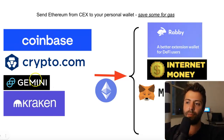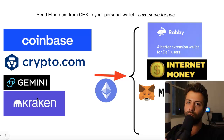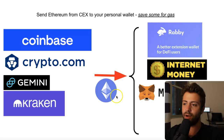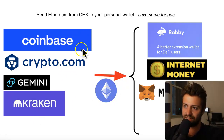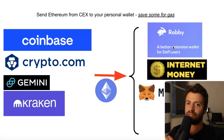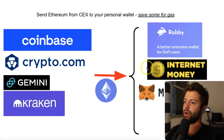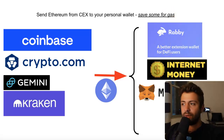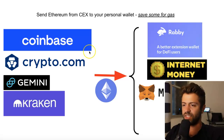Number one, you get a centralized exchange account — make multiple because what if one goes down? These let you buy crypto directly with your bank money. You link a bank account, send your bank money into the centralized exchange, and buy Ethereum. Then you send it out of the centralized exchange and into your personal wallet — the wallet where you own your own private keys. These are usually browser extensions for Chrome, Brave, Safari, or Firefox. I'm using MetaMask for the example, but Rabi is a great alternative and Internet Money is one to keep an eye on as well.